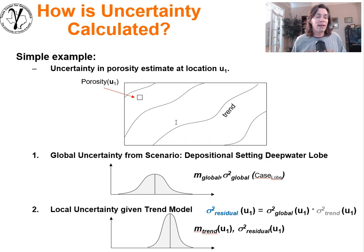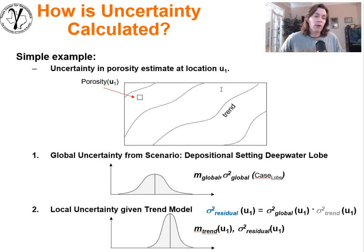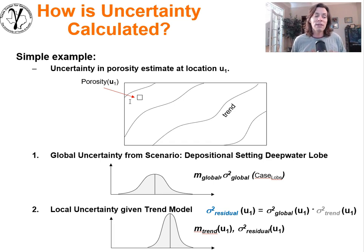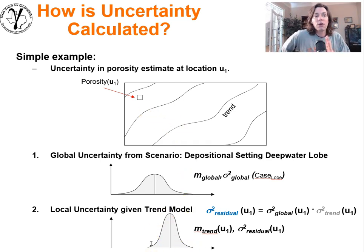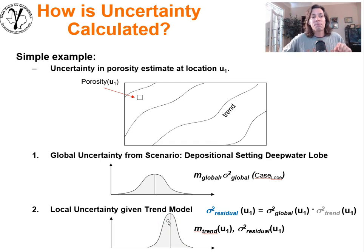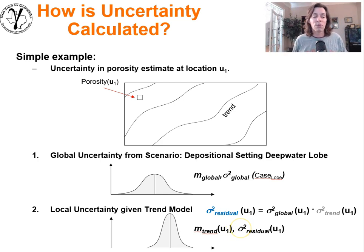We know something about deep water lobes, the processes involved in depositing and preserving them, adjacent fields, and various information sources. From that we can infer a PDF for the porosity at location u1. But we also model the trend, so not all porosity values from that distribution are equally likely at all locations. This happens to be a location with a high value from the trend, so we have decomposed part of the variability into the trend and we're dealing with a residual. The mean is shifted up and the variability decreases because part of it is now captured within the trend model — we're working with the residual variance.